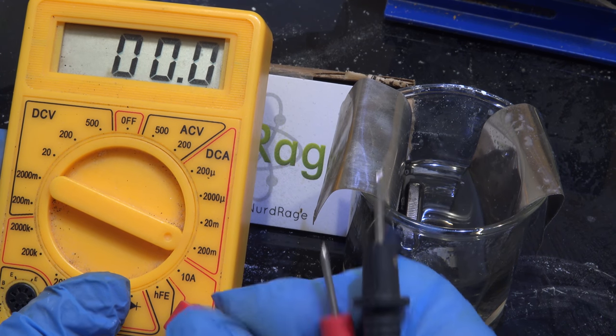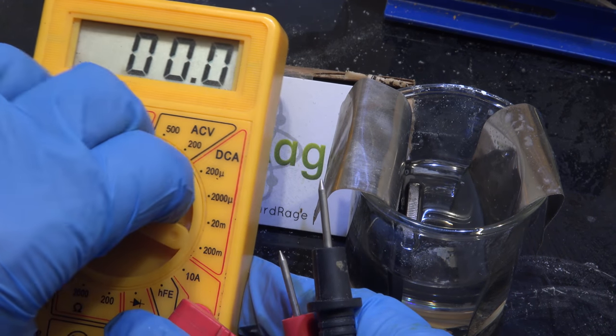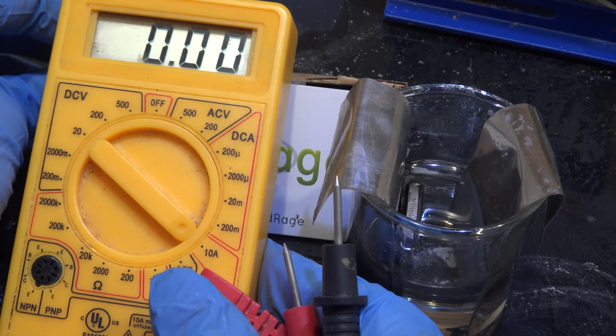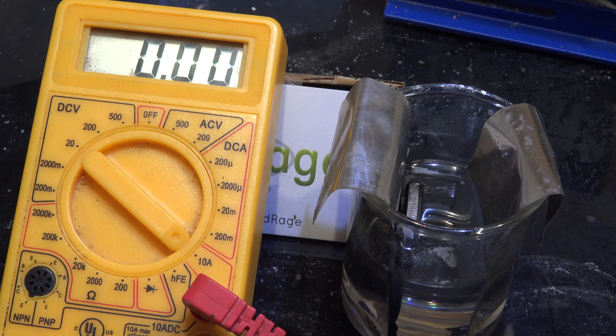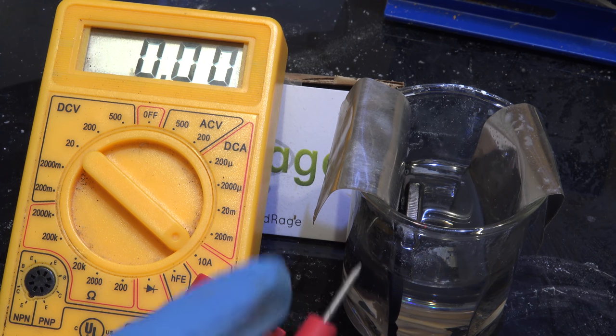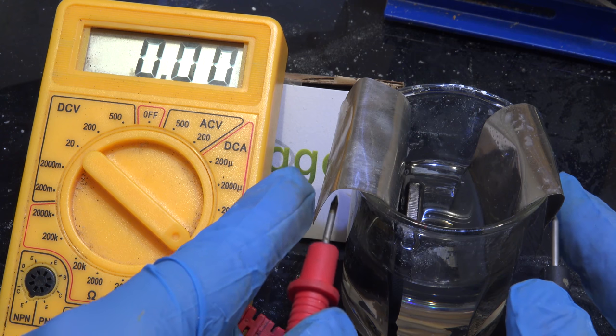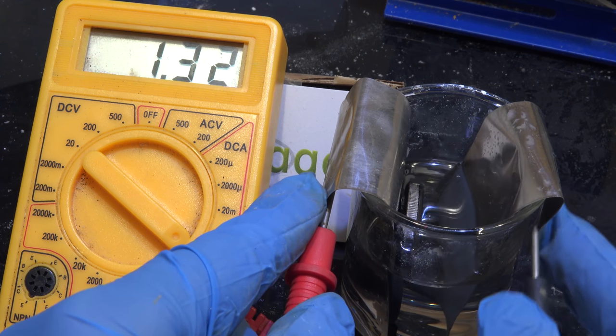On a side note, measuring the current directly by shorting the ammeter across the battery terminals is usually a very bad thing to do with proper commercial batteries, especially the larger ones. The current surge will at the very least blow a fuse in your meter.